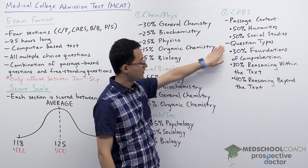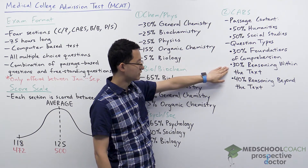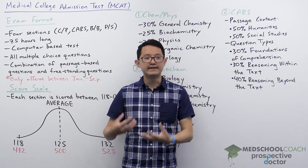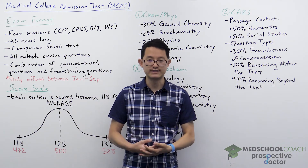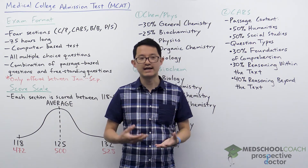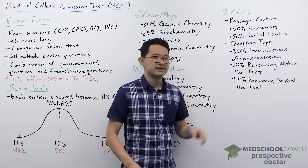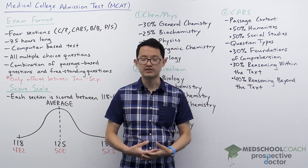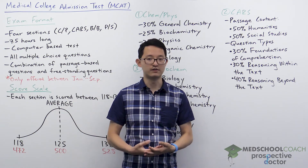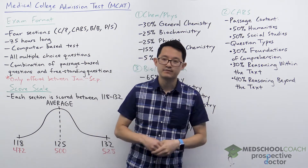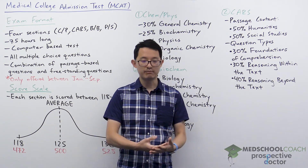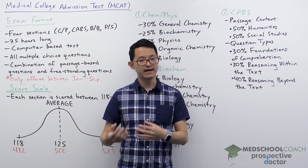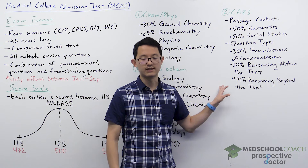The types of questions in the CARS section are 30% foundations of comprehension, 30% reasoning within the text, and 40% reasoning beyond the text. Foundations of comprehension simply asks whether you understood the text. Reasoning within the text requires you to infer information about the text or how it was written by the author. Reasoning beyond the text expects you to extrapolate passage information to new situations, or assess how newly introduced information affects the arguments made in the passage.